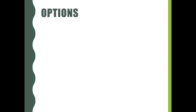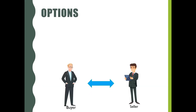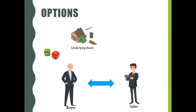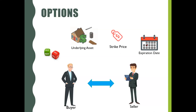What is Options Contract? An Options Contract is an agreement between two parties to facilitate a transaction on an underlying asset at a pre-decided price, referred to as the strike price, on or before the expiration date. For the option buyer, it's the right and not an obligation to buy or sell a specified underlying asset. For the option seller, it's an obligation and not the right to buy or sell a specified underlying asset.